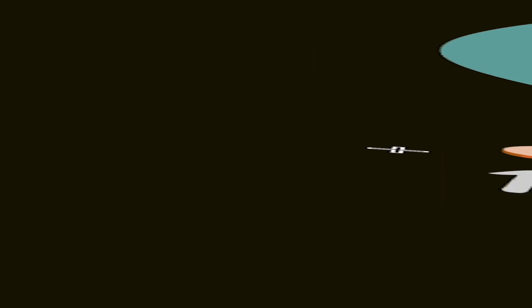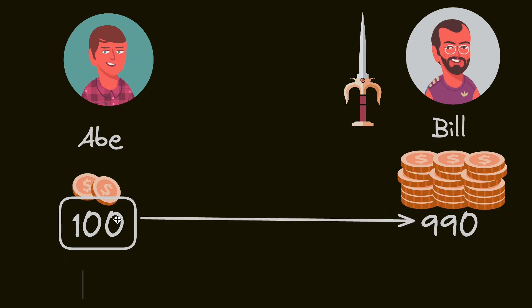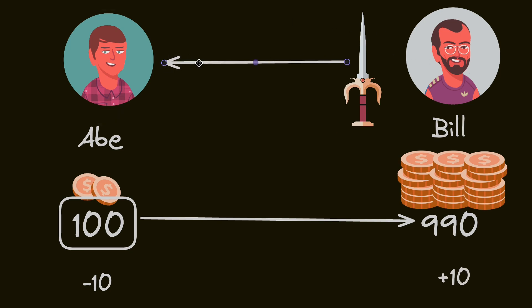If you think about it, the logic itself is really simple. We look at how many coins Abe has — in this case 100. If he has enough, we take 10 away, which leaves him with 90. We then add 10 to Bill's account, who now has 1,000. Then we take away the legendary sword from Bill and give it to Abe. That would seem to work.